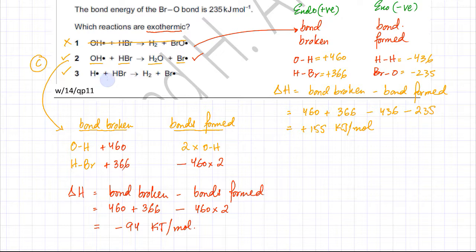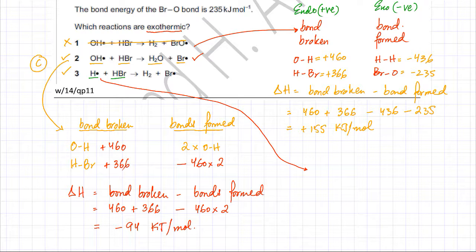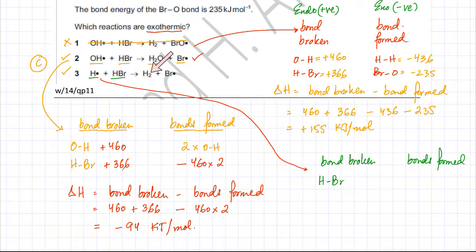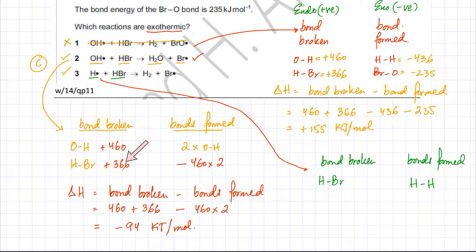For option 3: H was not forming any bond initially, but the HBr bond is being broken — so that is the only bond broken. For bonds formed: a hydrogen molecule (H2) is produced, so one H–H bond is being formed. Br is not forming any bond. The bond energies are: HBr = 366 kJ/mol and HH = 436 kJ/mol, both already established.